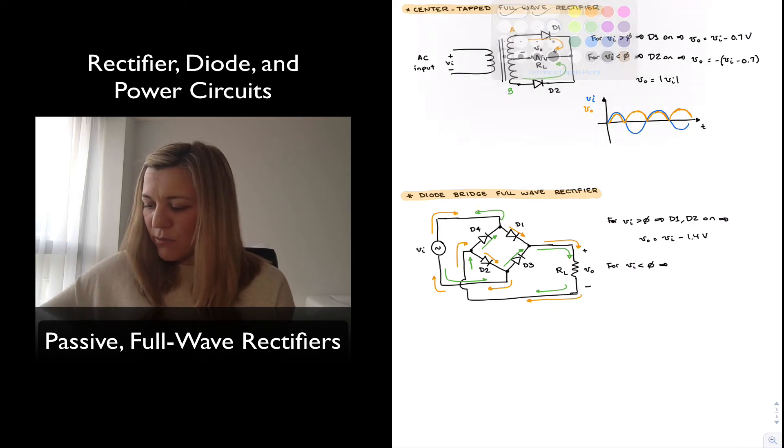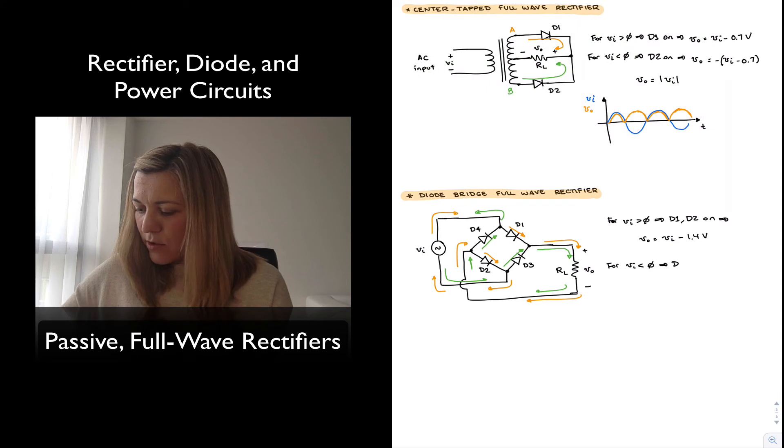So for negative input signals we have D3 and D4 that are turned on, and therefore v_out is going to be equal to negative v_in minus 1.4 volts.